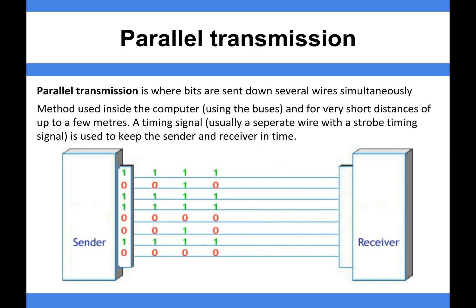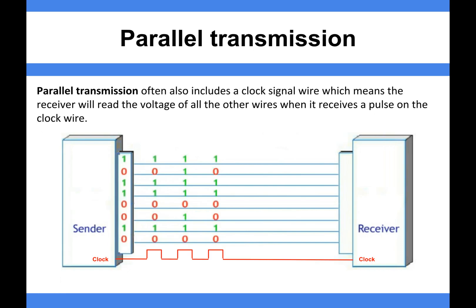Essentially, instead of sending one bit at a time like serial, with multiple wires you can send what are known as words — loads of ones and zeros all at the same time. If it has a clock signal, which it commonly does since it's used inside the computer where the computer shares a clock tick, then on every pulse of the clock you can read these wires, allowing you to send data at very high transfer rates.